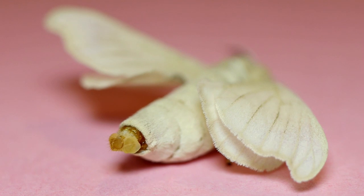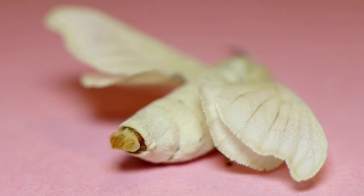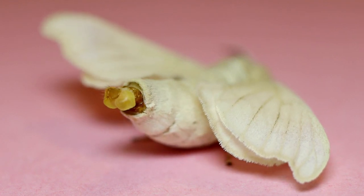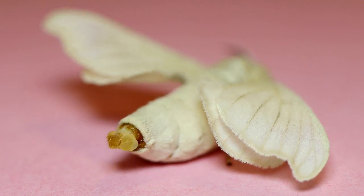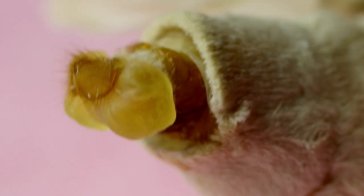When the female silk moth begins calling, she'll evert her pheromone gland from the tip of her abdomen. When she everts the pheromone gland, it actually inflates and looks something like a pair of balloons inflating on each side of the gland.